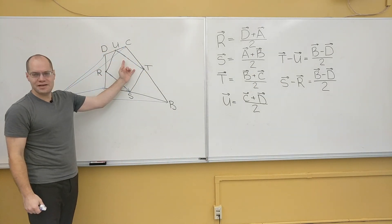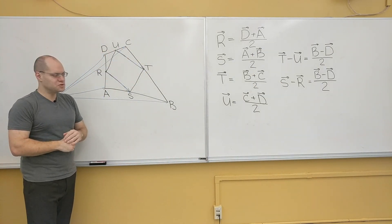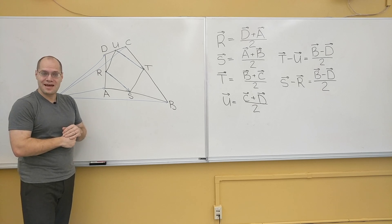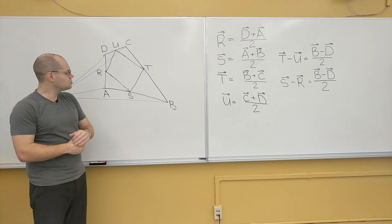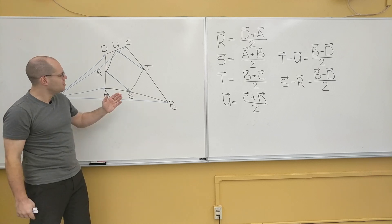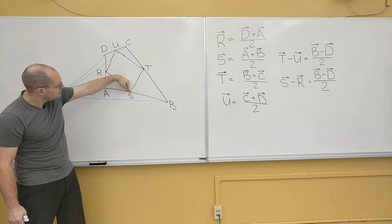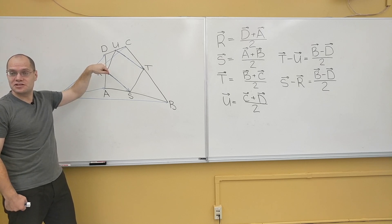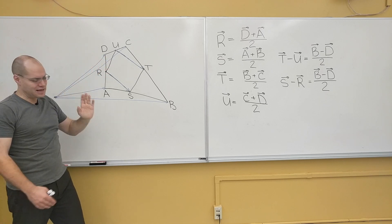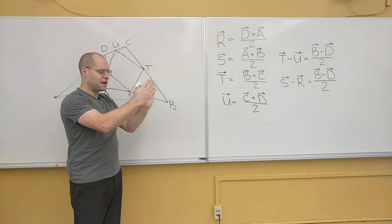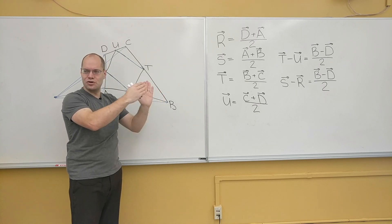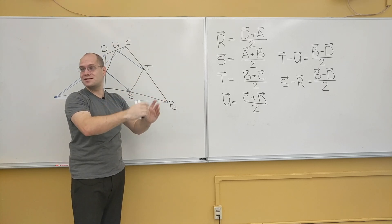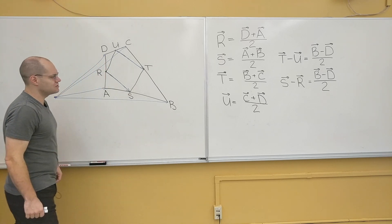And so these two are equal as vectors, which means that they're parallel and have equal lengths, which proves that RSTU is a parallelogram. Alternatively, you could have also proven that this side right here is parallel to this side, which is an alternative definition of the parallelogram. You can either say that two sides are parallel and equal in length, or you can say that the two sets of opposite sides are parallel. Those are equivalent definitions.